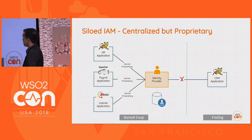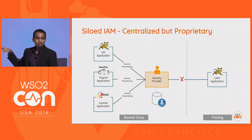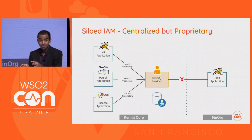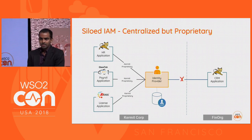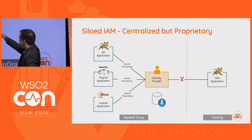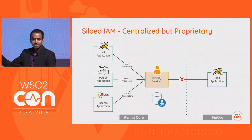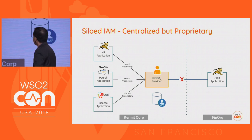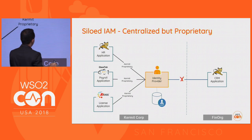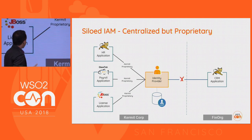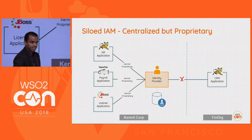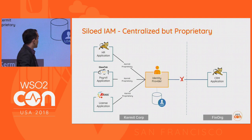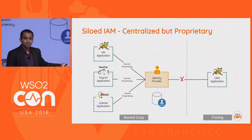Kermit organization identified the problem and brought in a centralized identity provider. All the apps offloaded the identity and access management work to this centralized IAM. But still there's a problem — these apps talk with the identity provider in a proprietary protocol. It's Kermit proprietary. The user store is now governed by the identity provider, so developers don't have to worry about securing identity, but the problem is not fully solved yet.